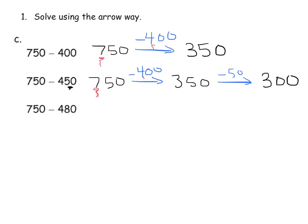Now this last one — in a traditional technique, teachers and parents might think of this as requiring borrowing or regrouping. Indeed, our students eventually are going to get to that standard algorithm. But right now, we want students to develop number sense. So we're going to withhold teaching the standard algorithm for borrowing and first ensure that our students learn number sense. So we're going to subtract by 400 first, starting with that greatest magnitude — subtract the hundreds. That gives us 350.